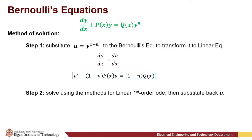The method of solution is by substitution. We substitute u equals y raised to 1 minus n into our Bernoulli's equation to transform it to its equivalent linear equation. Then we solve the resulting linear equation using the methods for linear first-order ODE. After that, we substitute back the value of u. This is a shortcut formula for transforming the Bernoulli's equation to its equivalent linear differential equation.